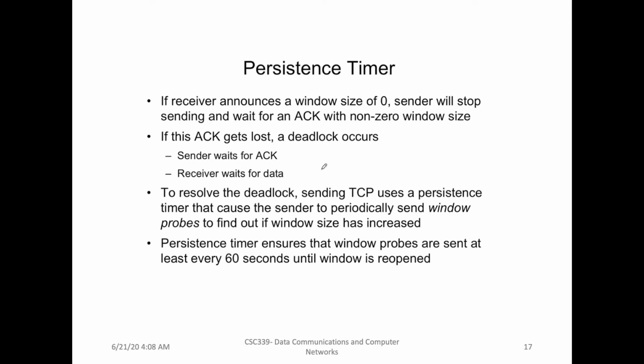In order to deal with the silly window syndrome, we use this mechanism where we want receiver to advertise a zero window size. This means sender will stop sending and wait for the acknowledgement, but this can obviously result in some sort of deadlock where the sender waits for acknowledgement and the receiver is waiting for the data. So in order to resolve this deadlock, we used a persistence timer where after 60 seconds the sender will send a probe message to the receiver to advertise its receive window size.